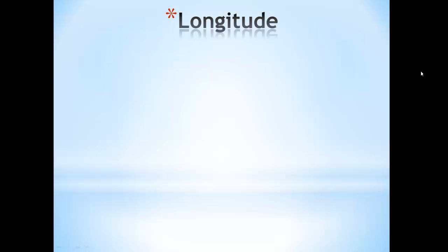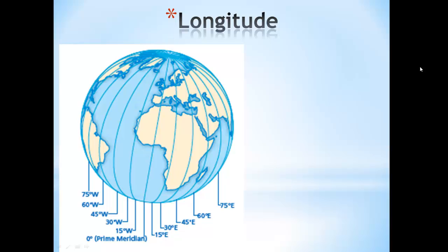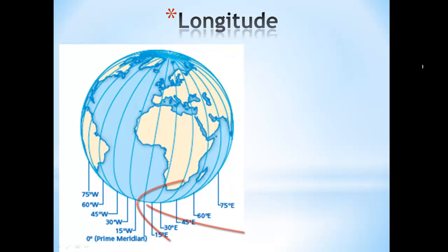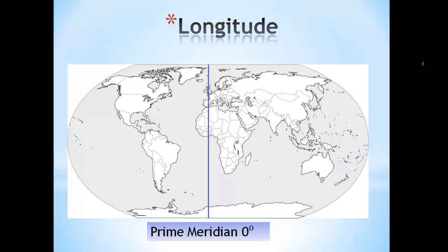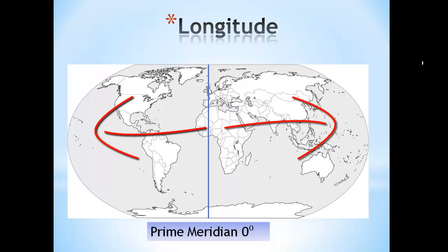Now let's define longitude. Longitude lines are vertical lines on the map. These lines are also called meridians. They do not go all the way around the world, but instead start at the north pole and run to the south pole. Longitude lines divide the Earth much like the segments of a pumpkin or an orange. The zero-degree line of longitude is called the prime meridian. To find the longitude of a location, you must measure the distance and direction from the prime meridian.